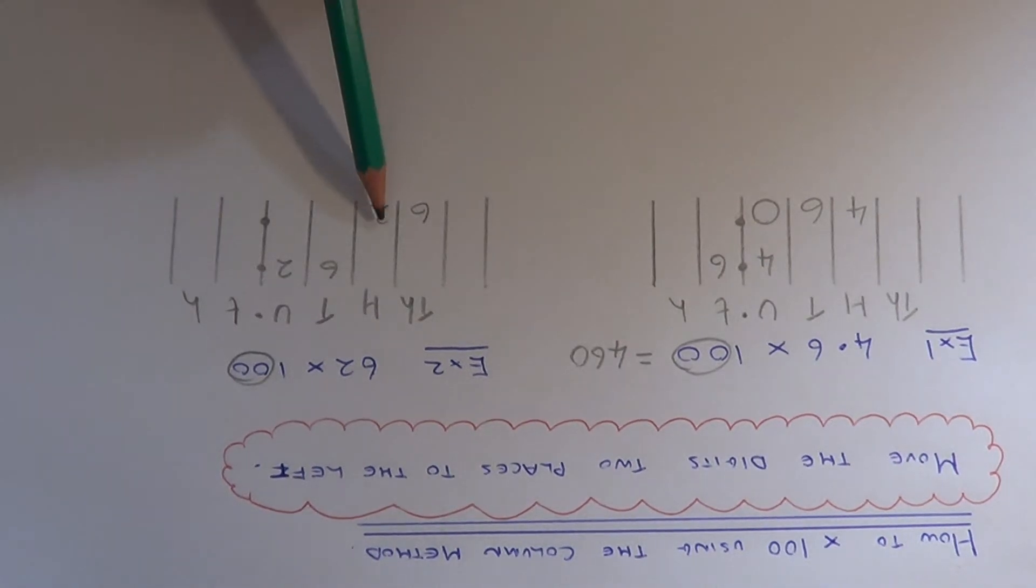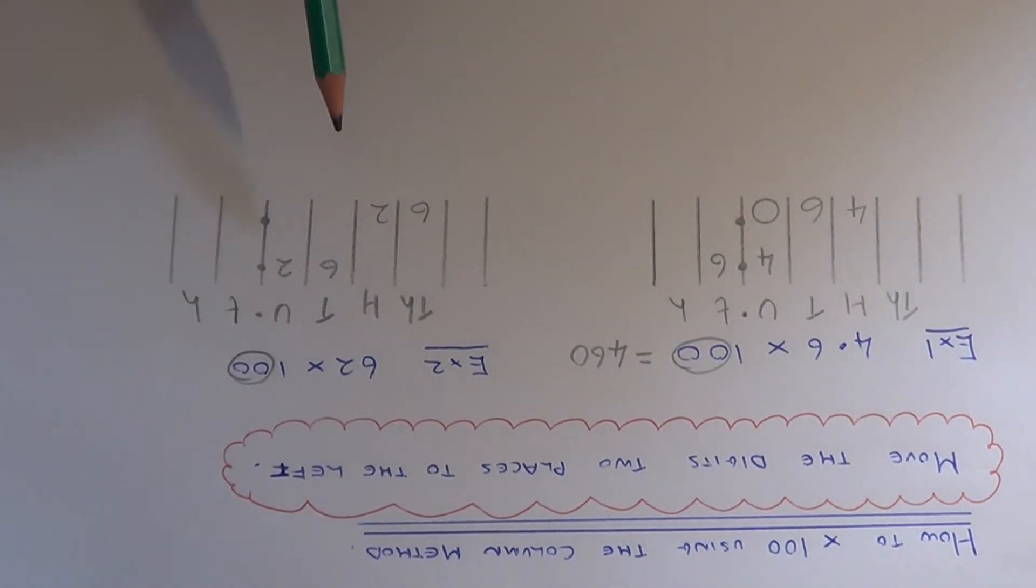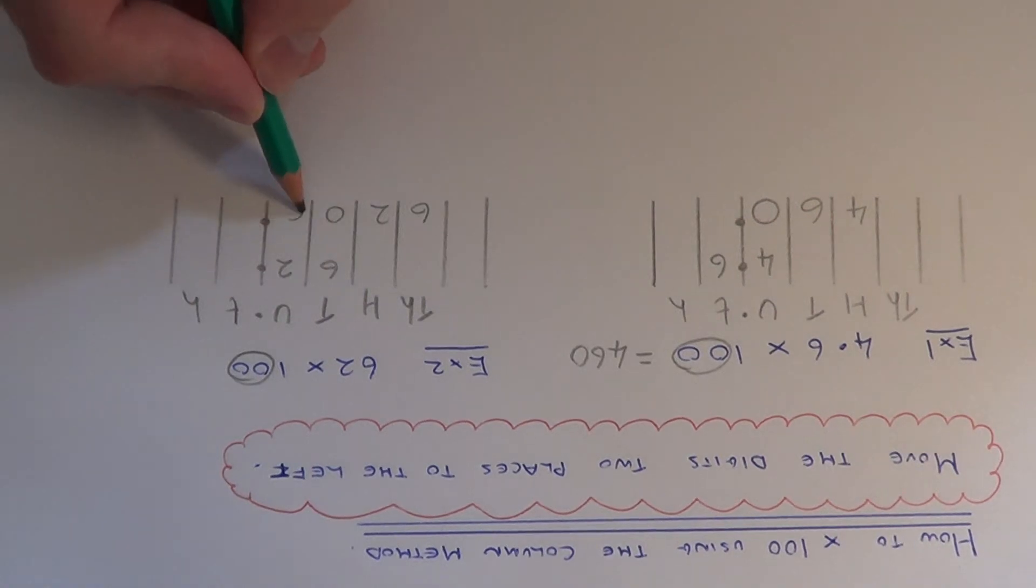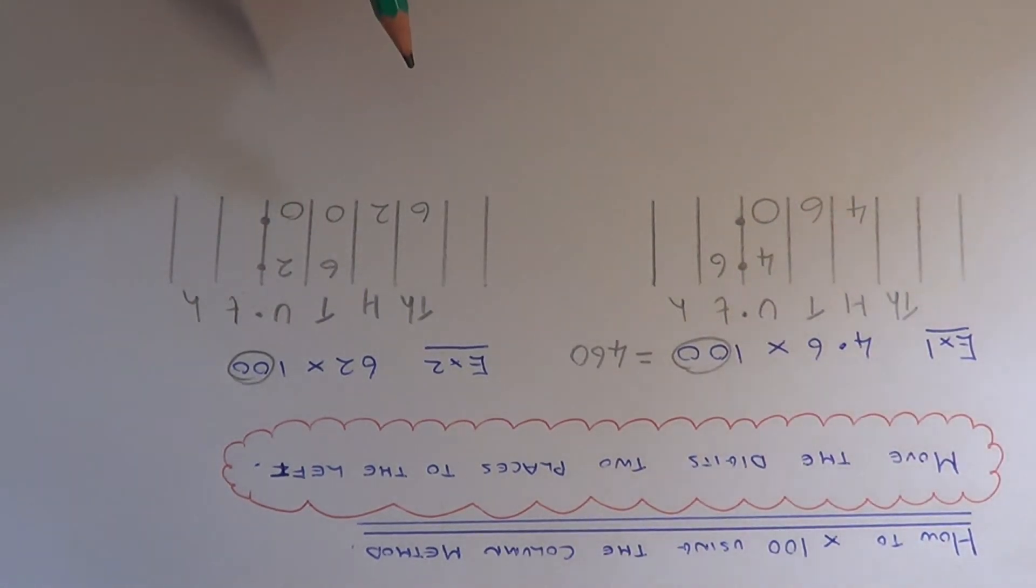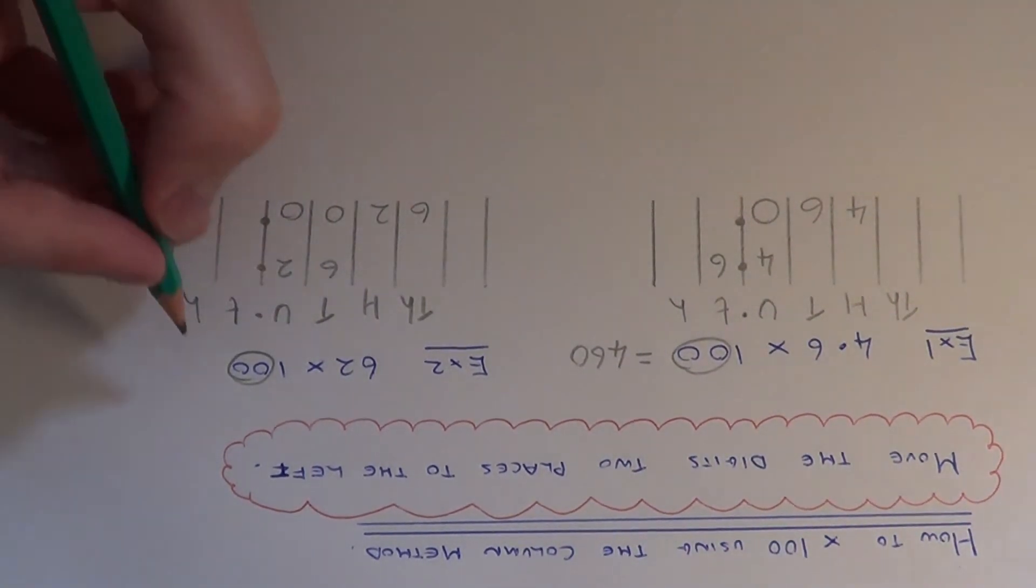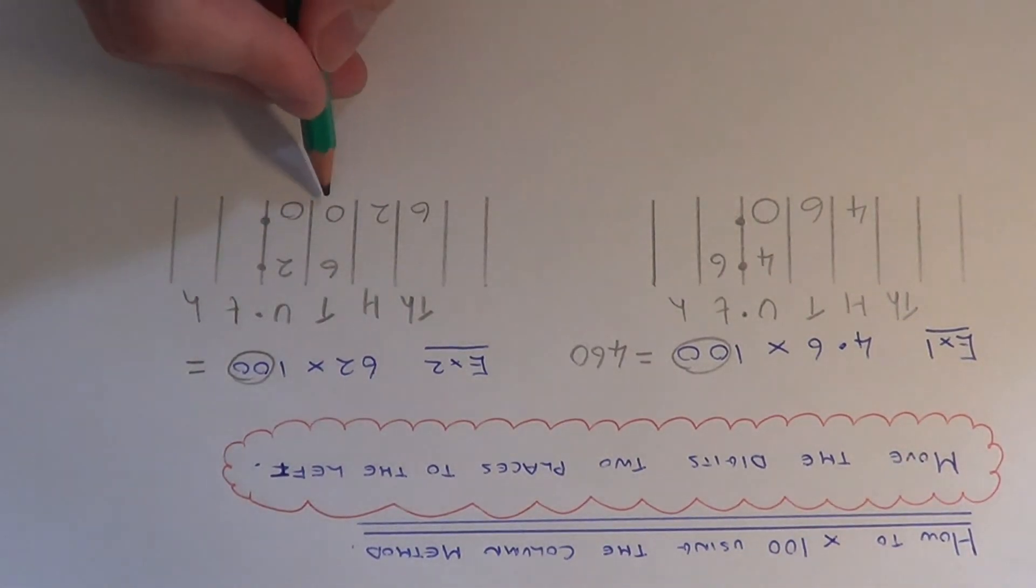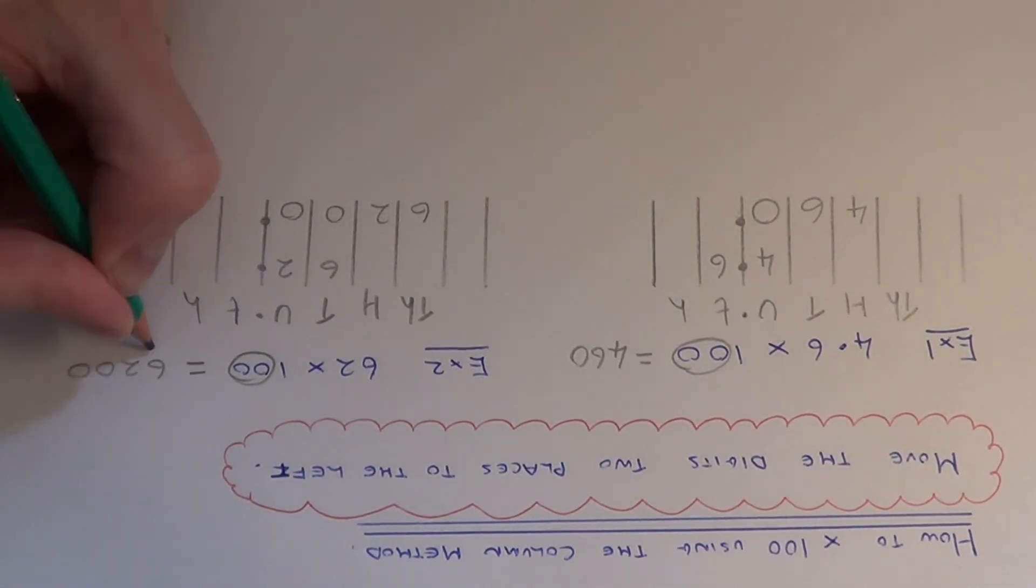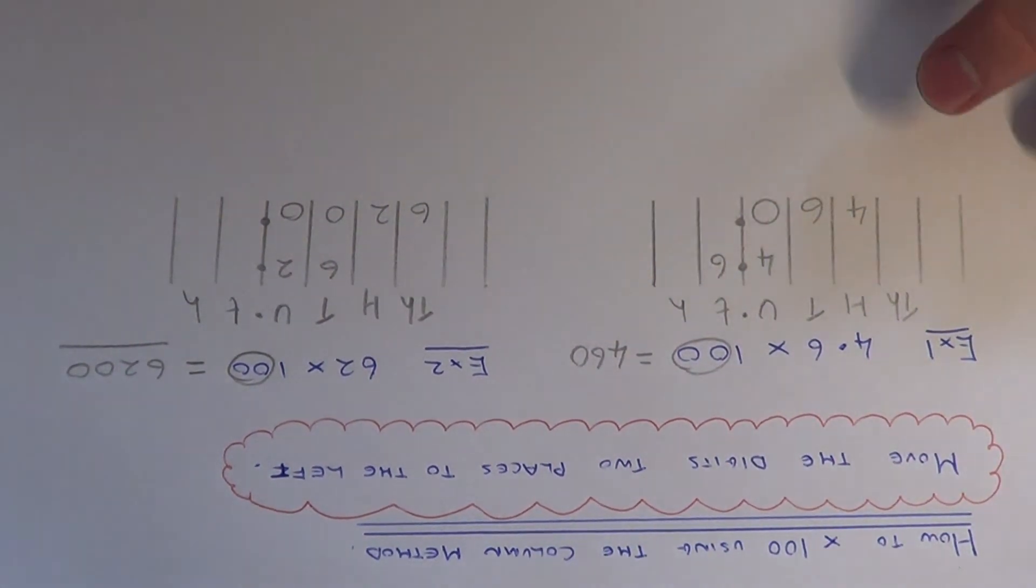We need to fill in the gaps between the numbers and the decimal point with zeros. Now we just need to write this answer off the columns. My final answer will be 6200. Thanks for watching.